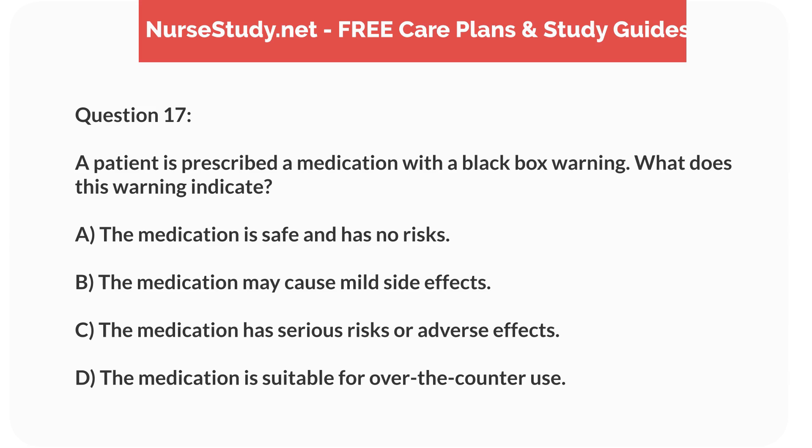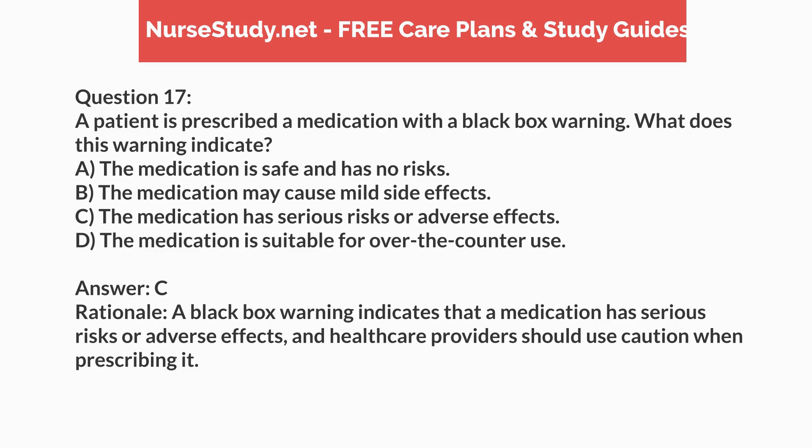Question 17. A patient is prescribed a medication with a black box warning. What does this warning indicate? A. The medication is safe and has no risks. B. The medication may cause mild side effects. C. The medication has serious risks or adverse effects. D. The medication is suitable for over-the-counter use. Answer: C. Rationale: A black box warning indicates that a medication has serious risks or adverse effects, and healthcare providers should use caution when prescribing it.